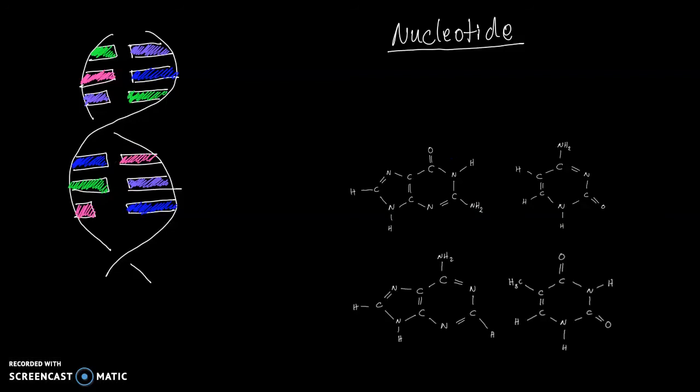Now, let's start off by looking at the nitrogenous base. Looking back at the sketch here, as you can see, there are four different types of nitrogenous bases which has been distinguished by the colors. The green, the pink, the purple, and the blue. What you are seeing on the right side here are the molecular structures of each bases.